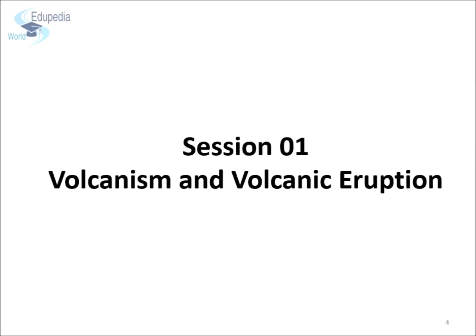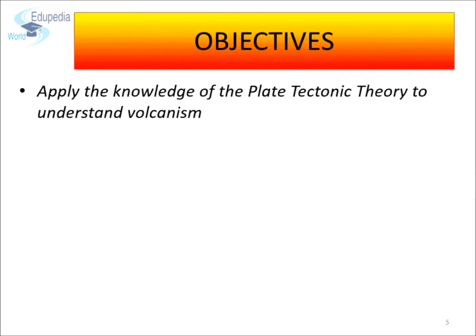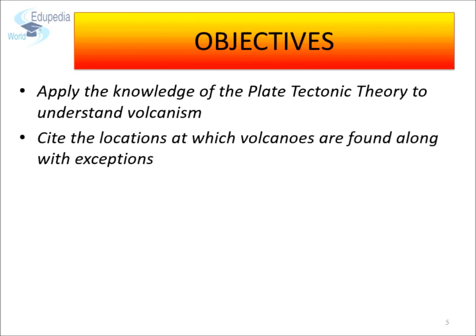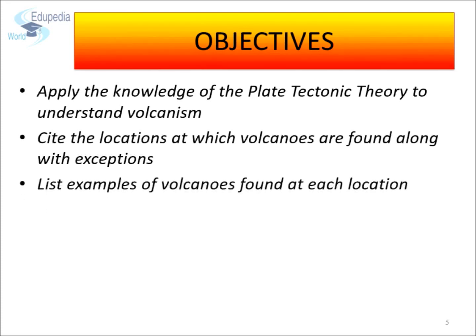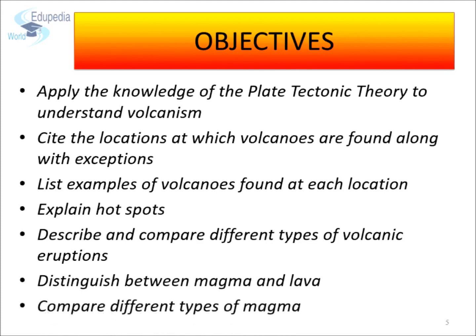This is the first session of the chapter. In this session, we are going to learn details about Volcanism and Volcanic Eruptions. We are going to try and achieve the following objectives: apply the knowledge of plate tectonic theory to understand Volcanism; cite the locations at which volcanoes are found along with exceptions; list examples of volcanoes found at each location; explain hotspots; describe and compare different types of volcanic eruptions; distinguish between magma and lava; and compare different types of magma.